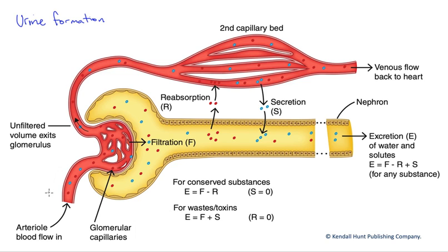We have an arteriole supplying blood flow into the glomerular capillaries, and at those glomerular capillaries, the bulk flux is going to favor filtration — that movement of plasma, essentially plasma minus its proteins, into this nephron. So we're going to move water, electrolytes, nutrients, and wastes.